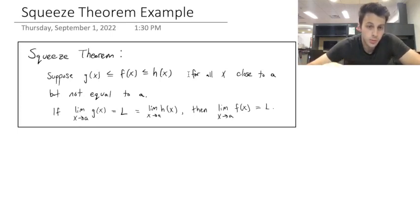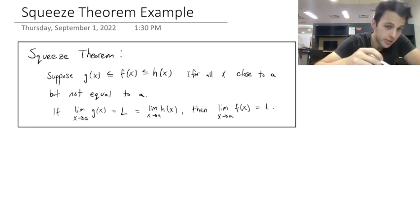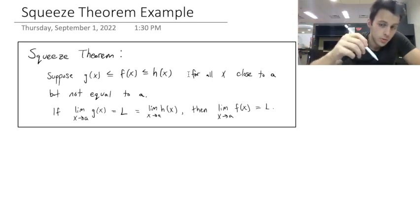So as a reminder, the squeeze theorem says suppose g of x is less than or equal to f of x, which is less than or equal to h of x, for all x close to some value a, but not equal to a. If the limit of g of x when x approaches a is equal to L, and it's the same for h of x, then the function that is being squeezed by g of x and h of x must also be equal to that limit.